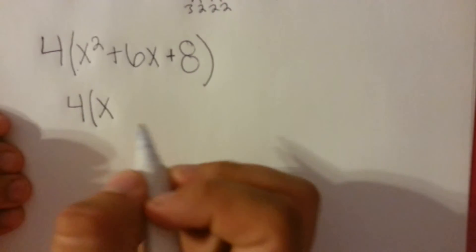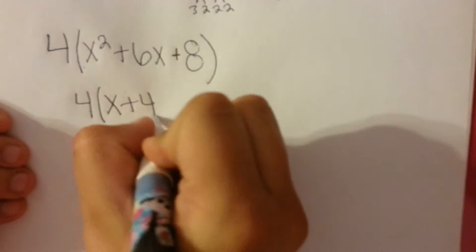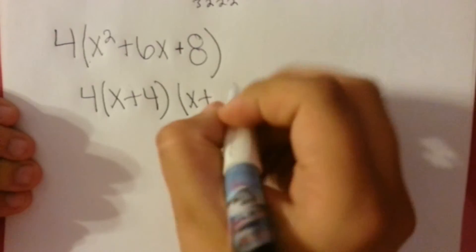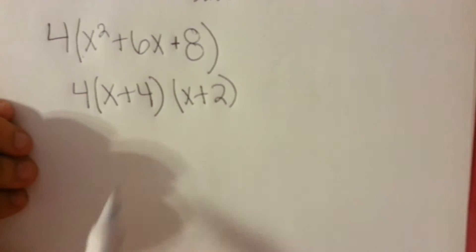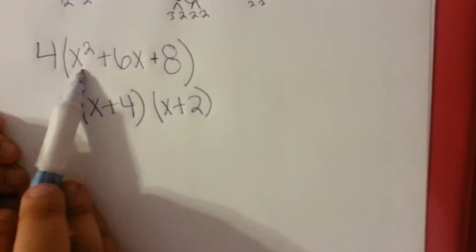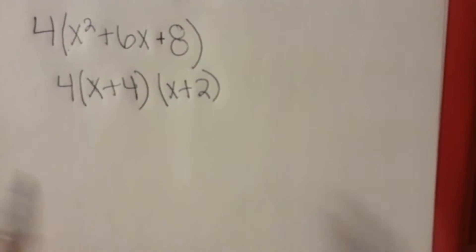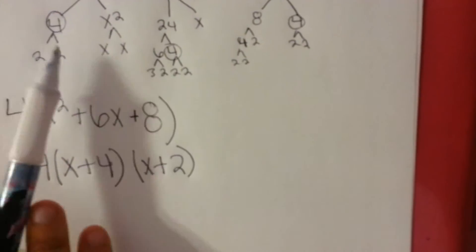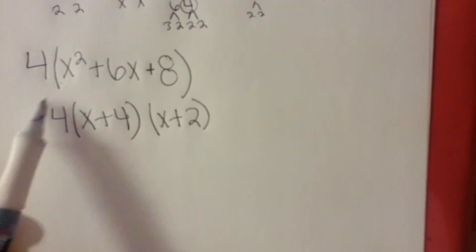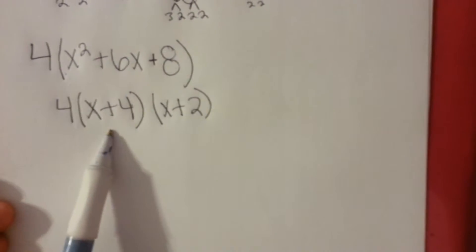Okay, so it would be x plus 4 and x plus 2. And then if you do the FOIL method, it will get you x squared plus 6x plus 8. And that's how you use the greatest common factor to factor out a number to make this simpler to get your binomials.